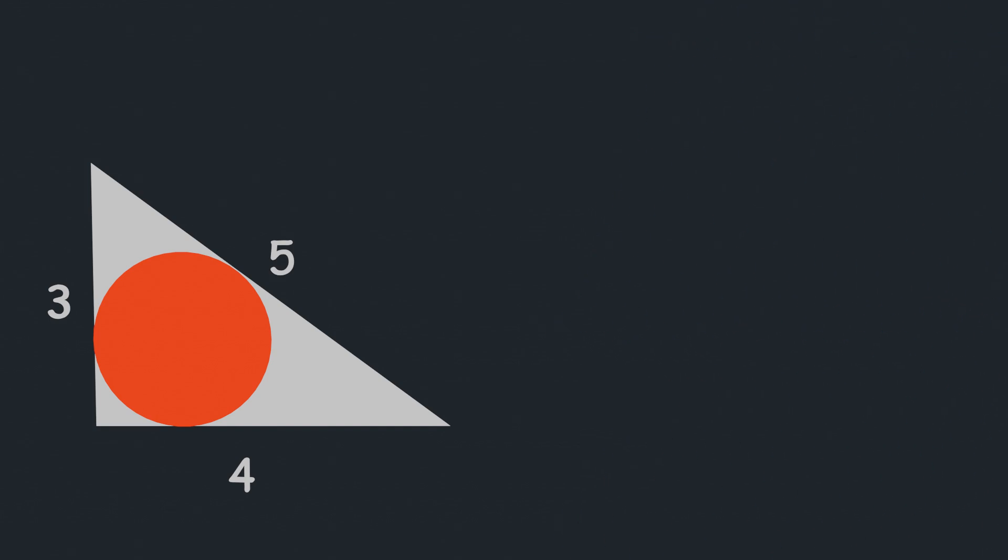So applying that property in this problem, we can see that this and this length should be equal, so let's name them x. And this and this length also should be equal, let's name them y. And same for these two lengths also, let's name them z.